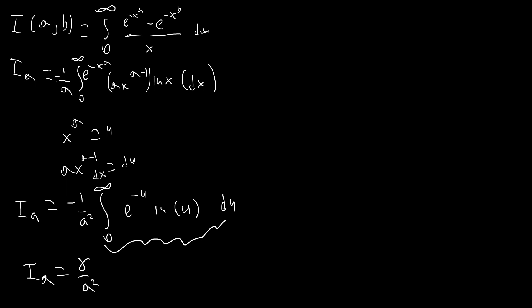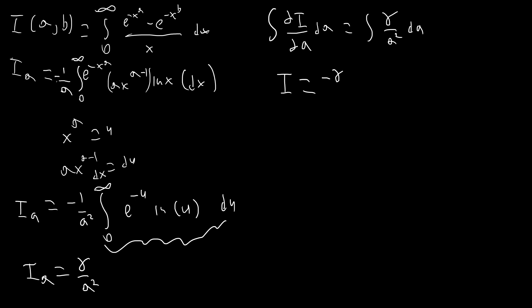Now that we've used Feynman's trick, we integrate back — we integrate both sides with respect to a, written as ∫(dI/da) da. On the left side we just get I again. This is going to equal −γ/a + c, where c is a constant of integration.